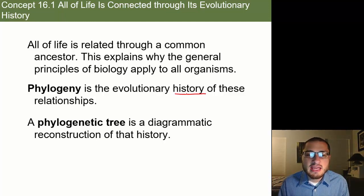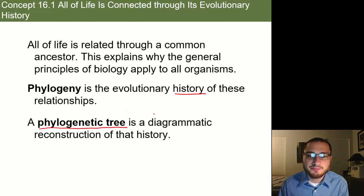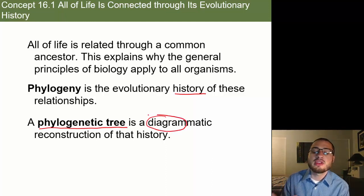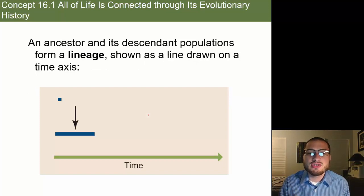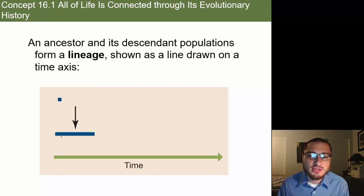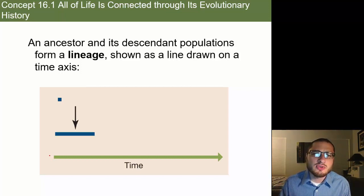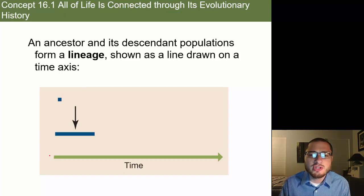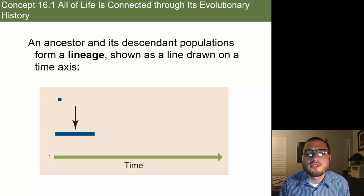A phylogenetic tree is a diagrammatic reconstruction of the history. We use these phylogenetic trees to create diagrams or depictions of how things branched off. An ancestor and its descendant populations form a linkage shown as a line drawn on a time axis. Sometimes you'll hear phylogenetic trees called family trees, evolutionary trees, or even cladograms — all really referring to the same thing.